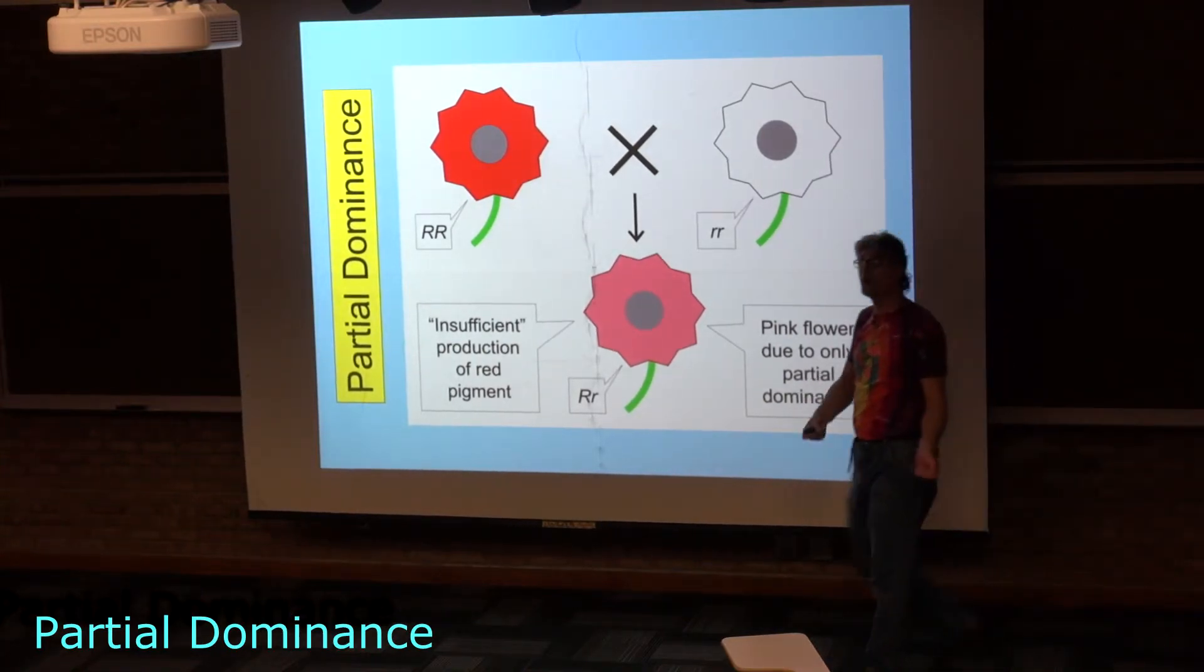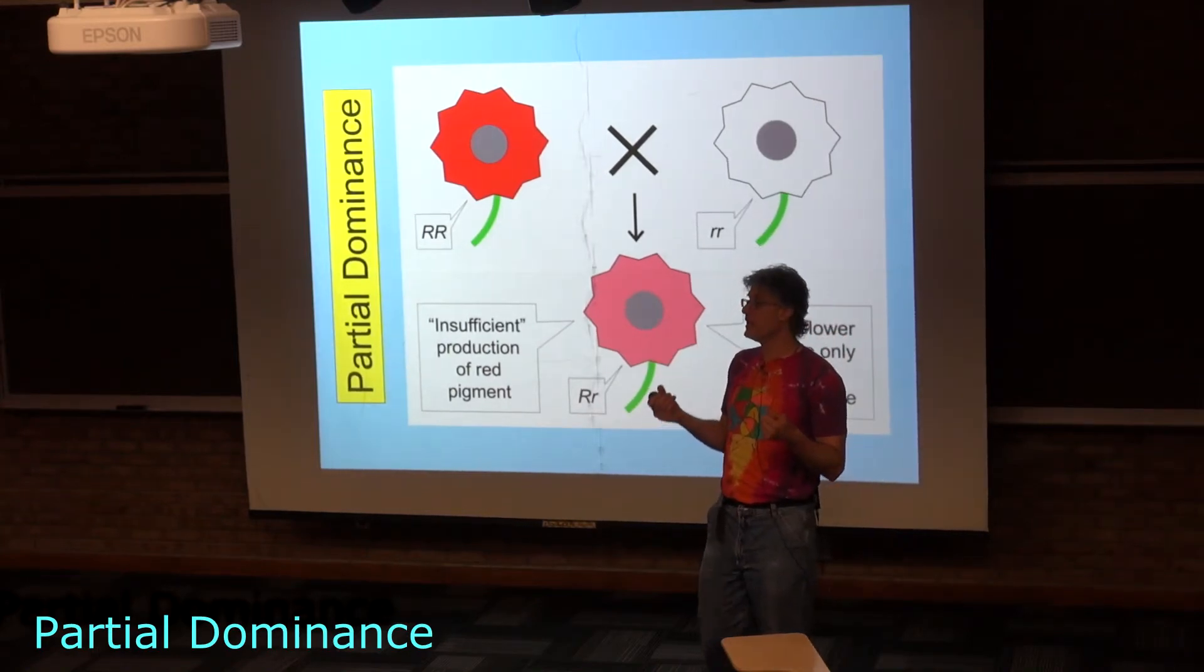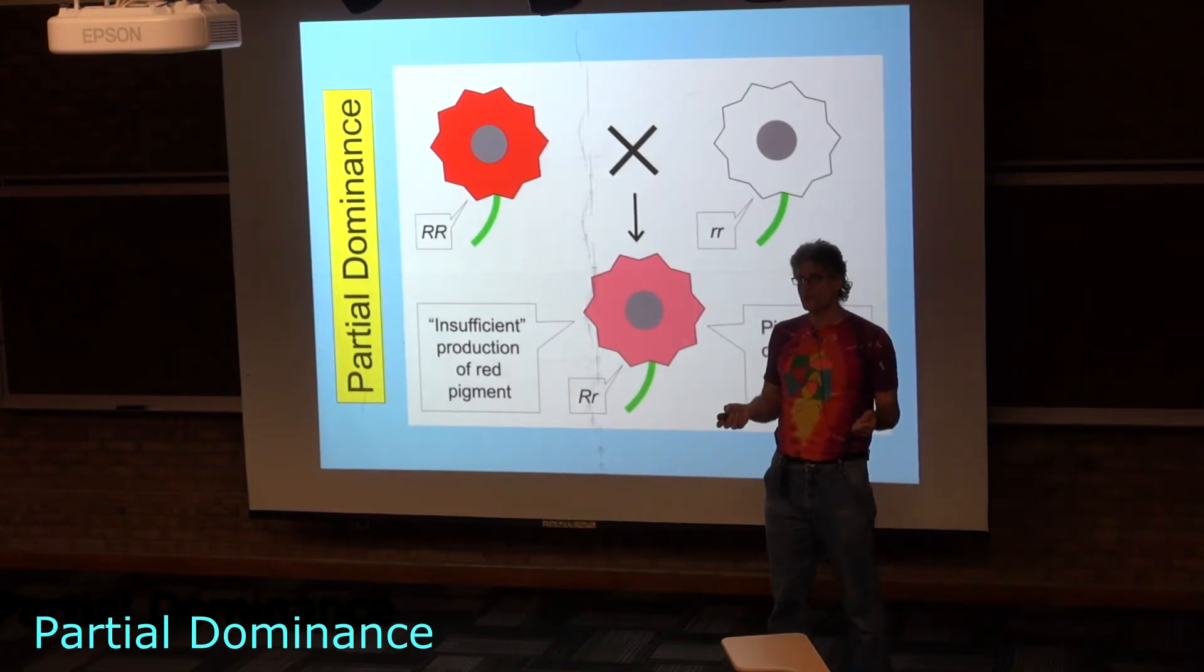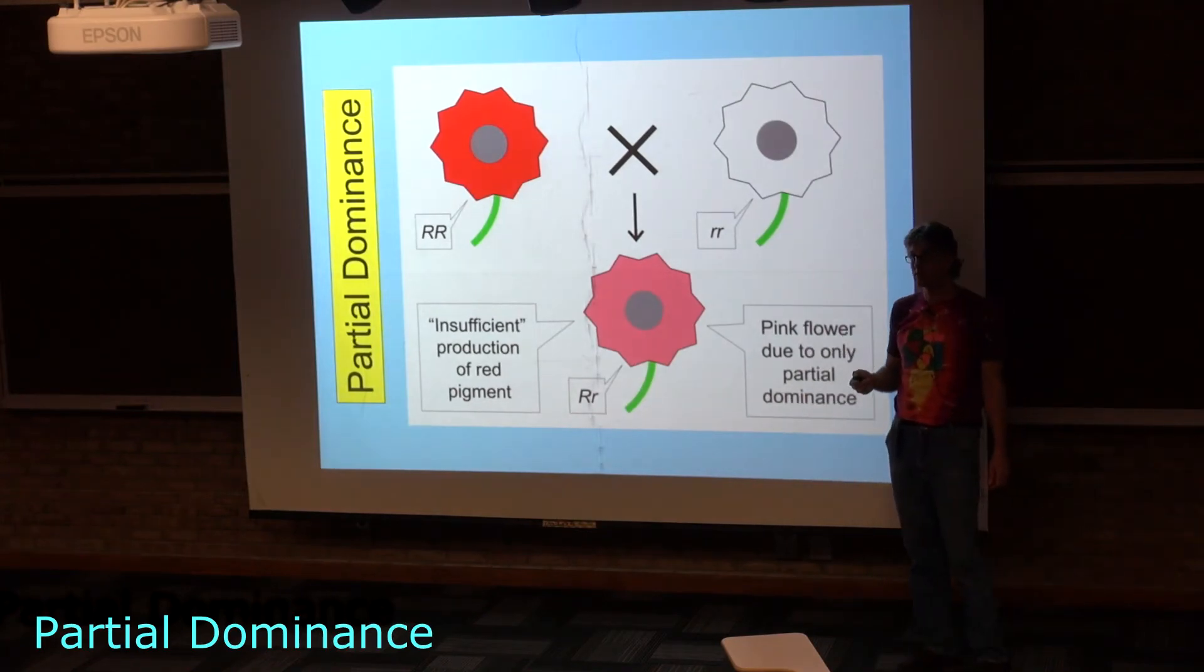So this would give you a one-to-two-to-one if you basically crossed pink flowers. You'd get a one-to-two-to-one genotypic ratio, but you'd also get a one-to-two-to-one phenotypic ratio because in this case there is a one-to-one mapping of genotype on phenotype.